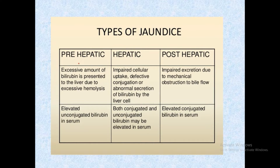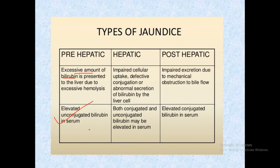In pre-hepatic jaundice, an excessive amount of bilirubin is presented to the liver due to excessive hemolysis. Since this bilirubin has not yet entered the liver, it remains unconjugated, resulting in elevated unconjugated bilirubin in the serum.